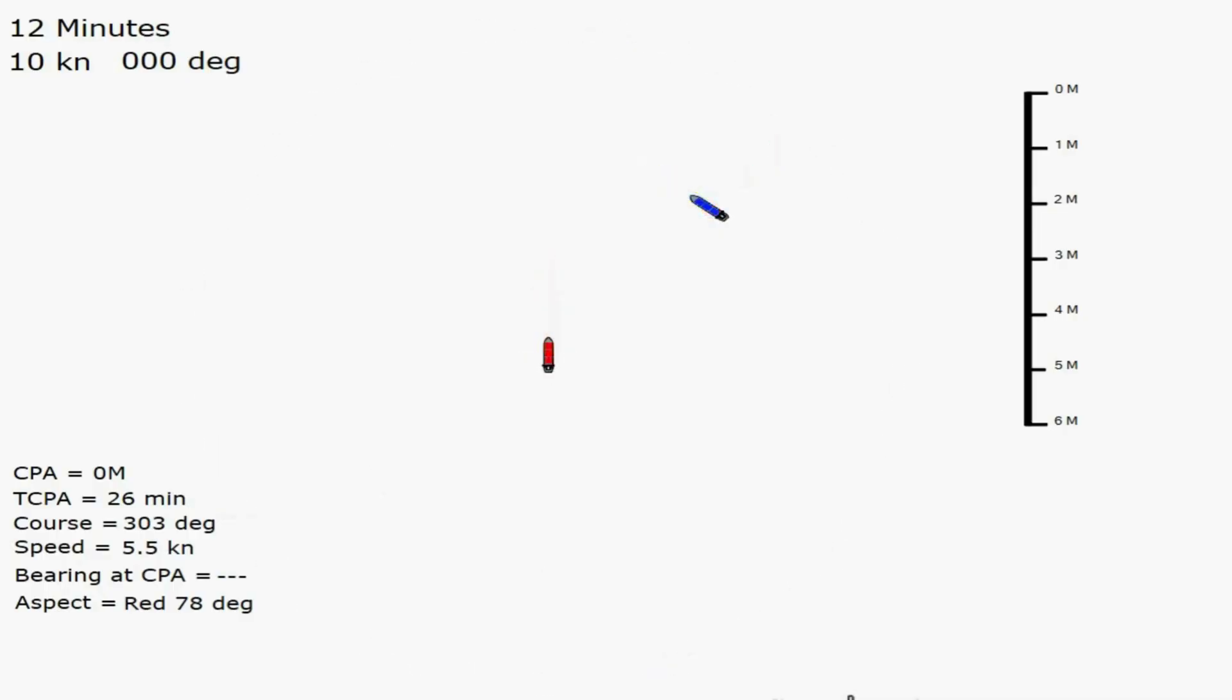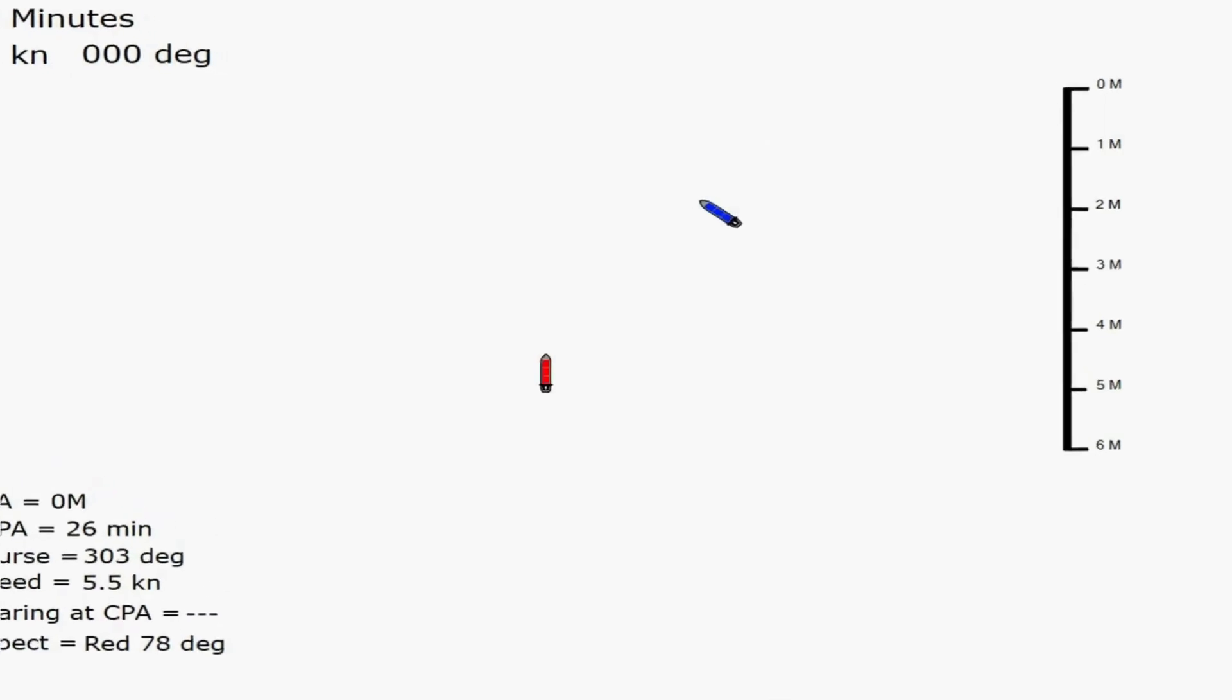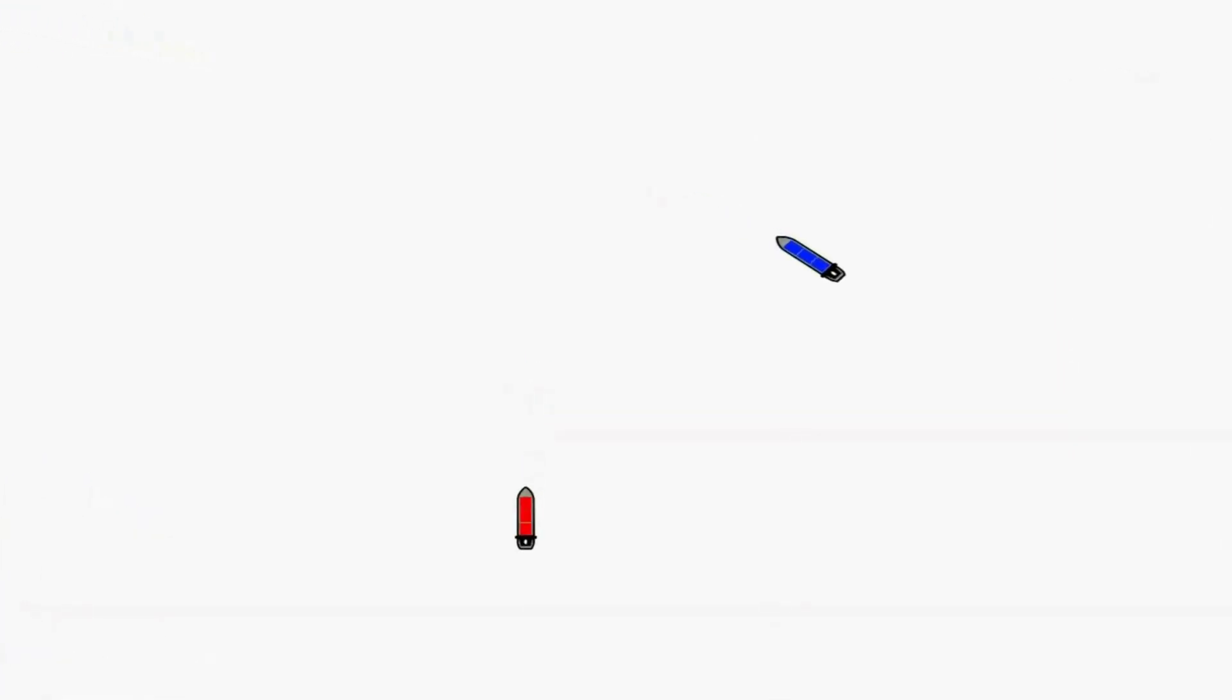We can see there's two vessels, both moving ahead, but they're on a steady bearing, so risk of collision exists. So, of course, we know from the collision regulations, the action to take is the red vessel is going to come round to starboard, and then both vessels will be clear to continue until they're finally passed and clear.